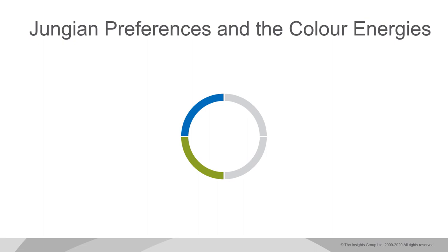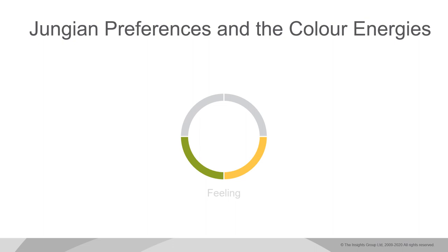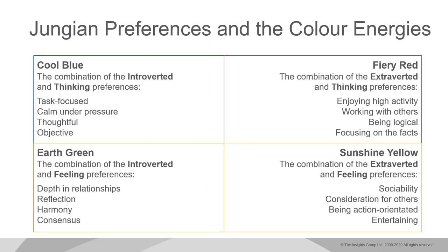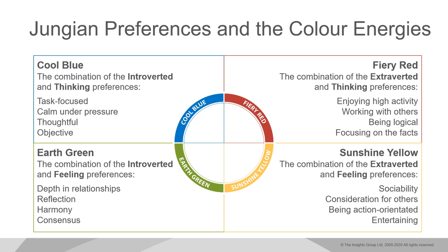You can take the learning deeper using these animations, reminding them about Blue and Green being more introverted and Red and Yellow being more extroverted. Blue and Red energy at the top of the model are thinking-based decision-makers, and Green and Yellow energy at the bottom are feeling-based decision-makers. You can share that the reason we define the color energies the way we do is because of the Jungian attitudinal functions that sit underneath them. Fiery Red is Jung's extroverted thinkers; Sunshine Yellow is extroverted feelers; Earth Green is introverted feelers; and those who lead with Cool Blue are Jung's introverted thinkers.